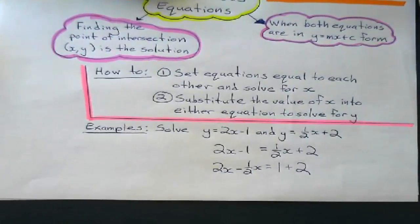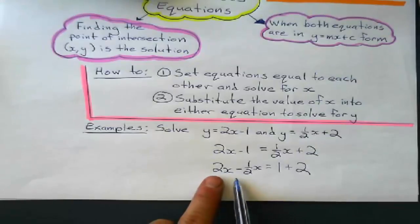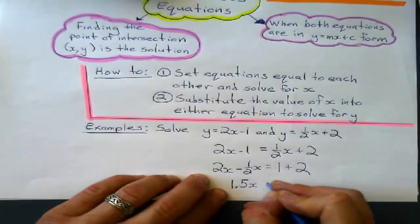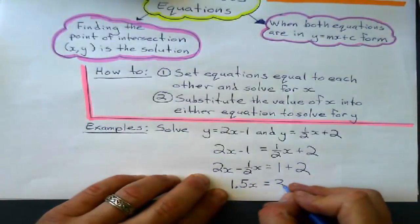Okay, how does that look? Looks okay. Collect like terms on this side. 2x minus 1 half x. Okay, what does that give me? 1 point 5 x and that equals 1 plus 2 is 3.